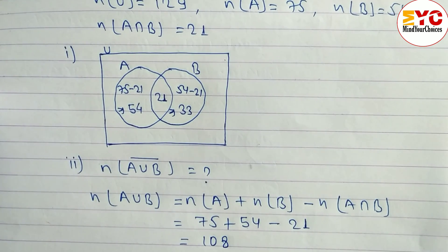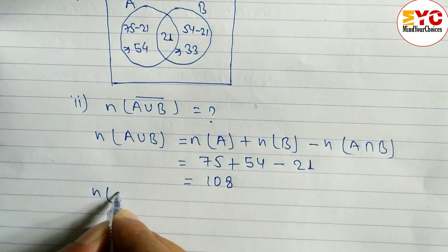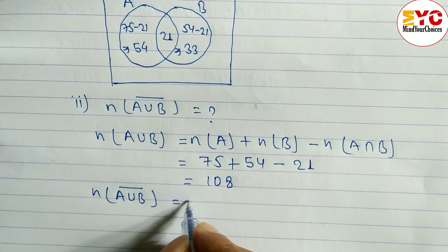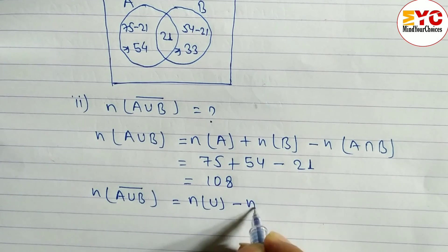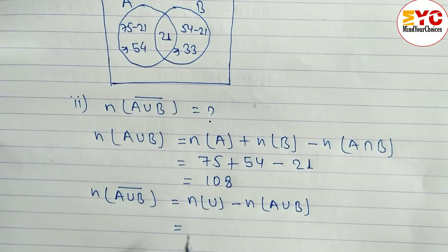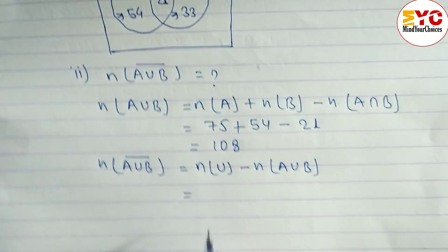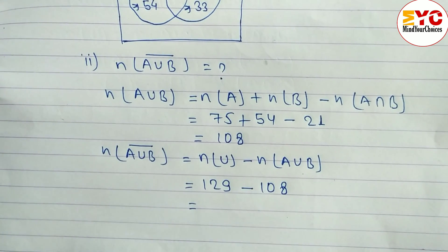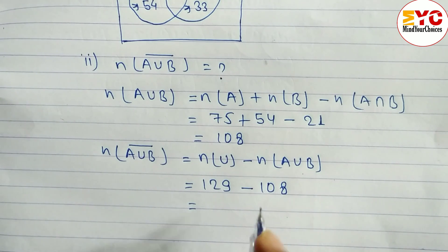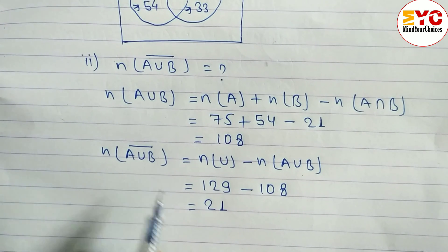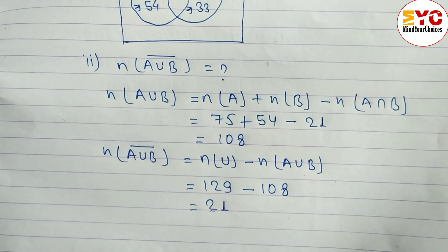Now find n(A∪B complement) using the formula: n(U) − n(A∪B) = 129 − 108 = 21. So the value of n(A∪B complement) is 21. Learn the formulas properly first, then you can apply them to any problem.